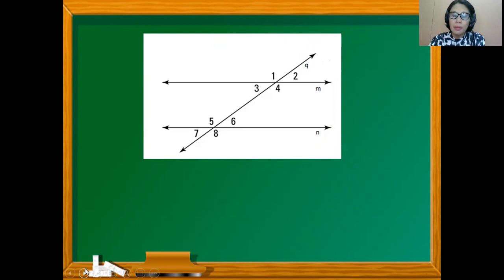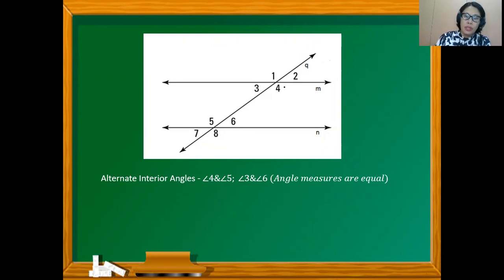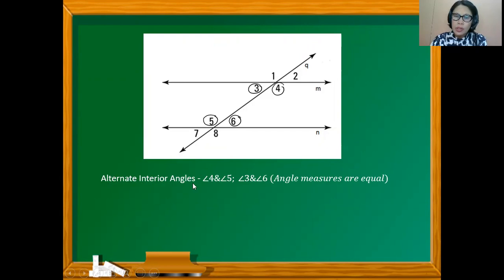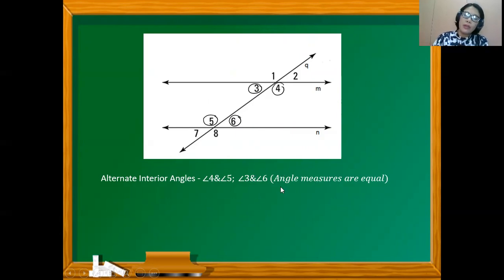Given two parallel lines M and N and transversal line Q, we have alternate interior angles 4 and 5, as well as alternate interior angles 3 and 6. They are called alternate interior angles because they are placed alternately inside the parallel lines. The relationship between pairs of alternate interior angles is that their angle measures are equal — angles 4 and 5 are congruent, as well as angles 3 and 6.